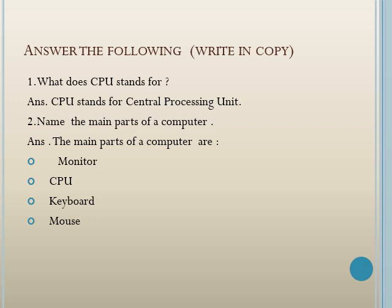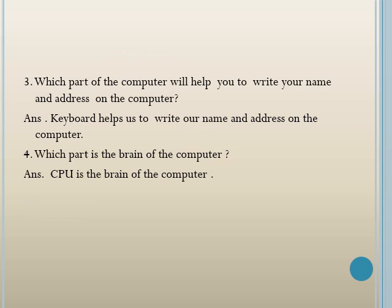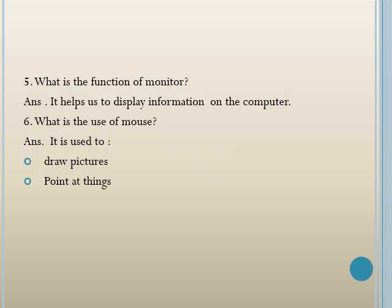Answer the following in your copy. What does CPU stand for? CPU stands for Central Processing Unit. Name the main parts of a computer: monitor, CPU, keyboard, and mouse. Which part helps you type your name and address? The keyboard. Which part is the brain of the computer? The CPU. What is the function of the monitor? It displays information from the computer. What is the use of the mouse? It is used to draw pictures and point at things.